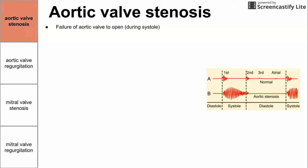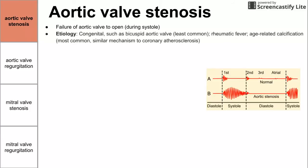Aortic valve stenosis is defined as the failure of the aortic valve to open. This happens during systole, when the ventricles contract. The etiology comes from three main causes. The most common is age-related calcification, which happens through a mechanism similar to coronary atherosclerosis.